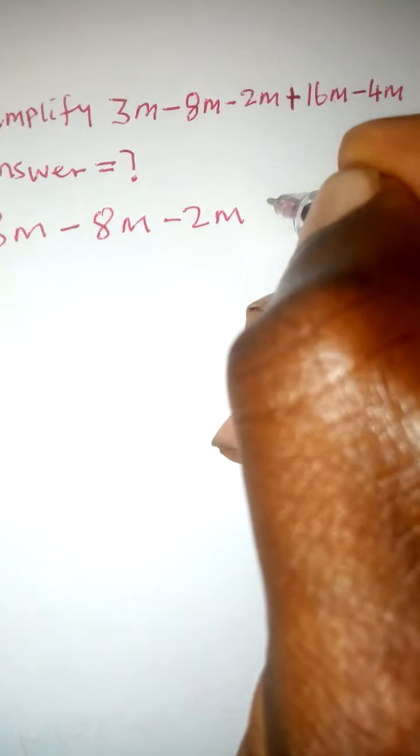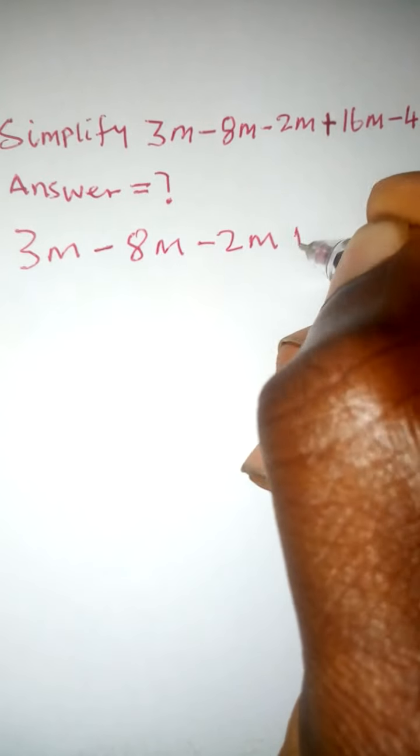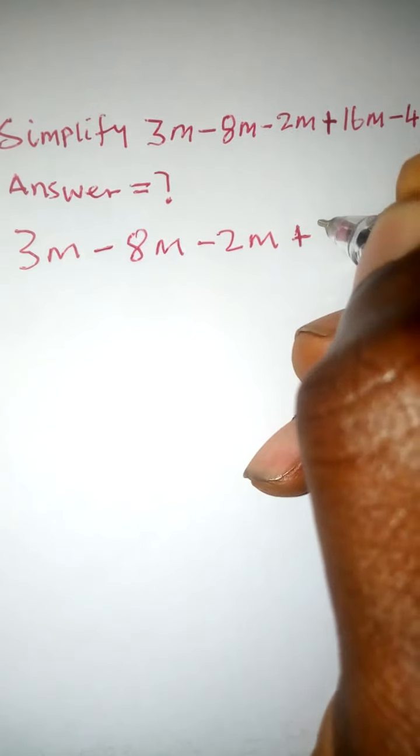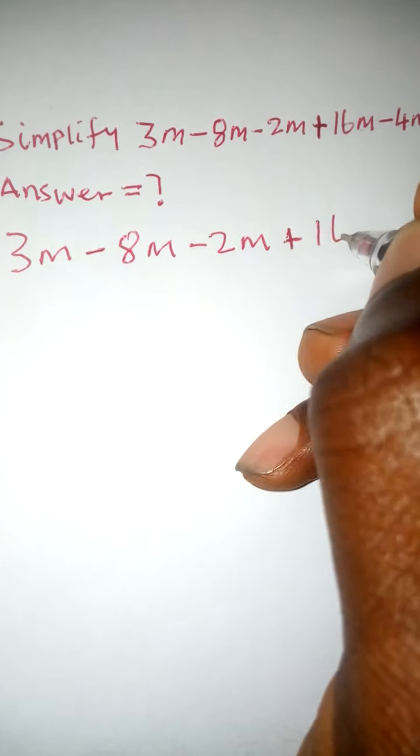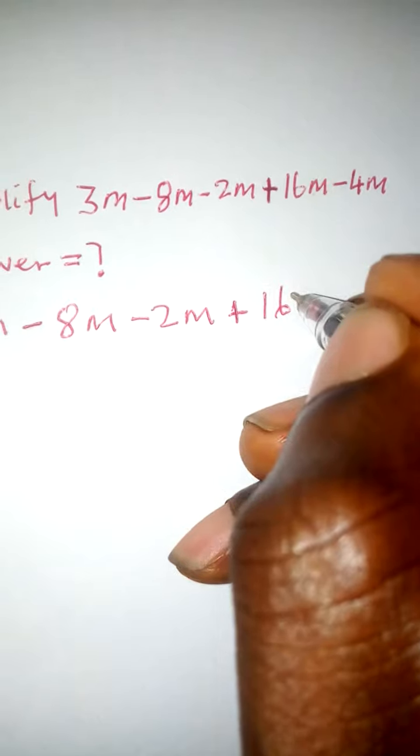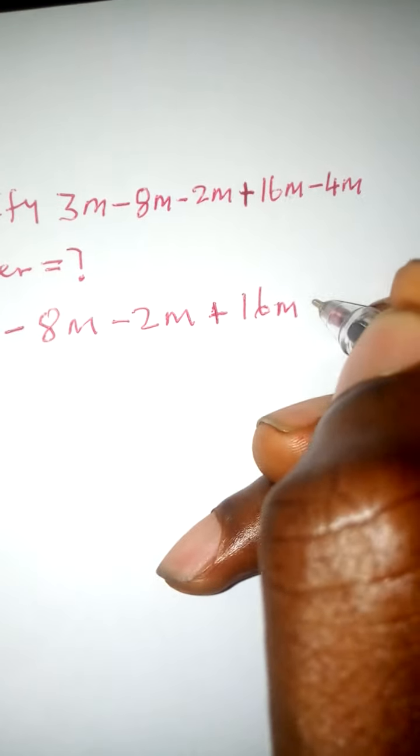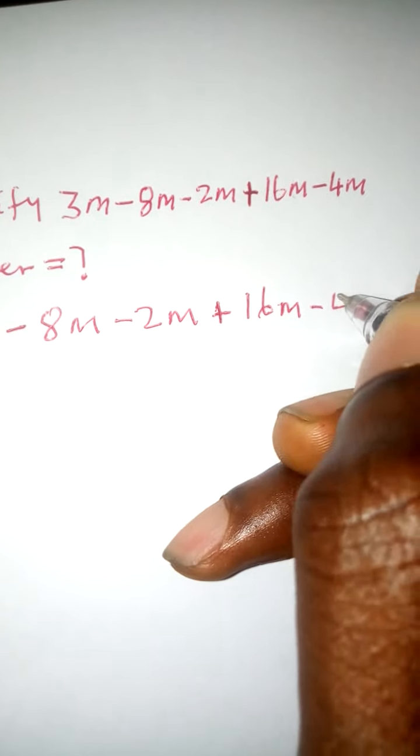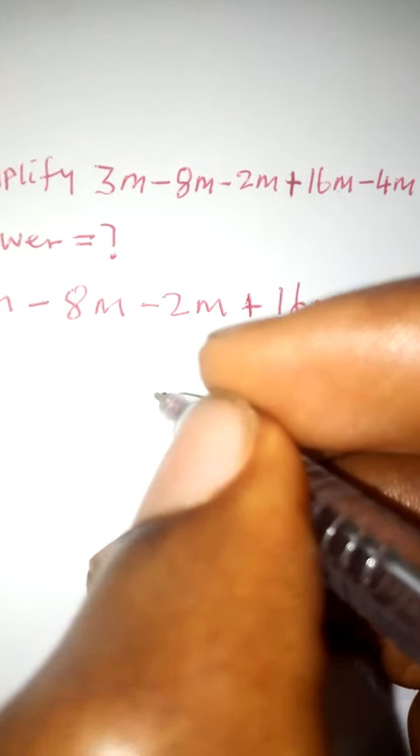Minus 2m. This is a plus. Then plus 16m. Then minus 4m. Okay.